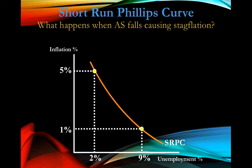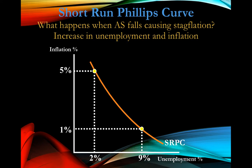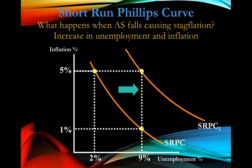When aggregate supply falls — cost-push inflation, something that causes stagflation — what happens? In stagflation we have higher prices and higher unemployment. That's going to shift our Phillips Curve to the right, because inflation is high at five percent and unemployment is high at nine percent. Our entire Phillips Curve shifts when we have a shift in aggregate supply.